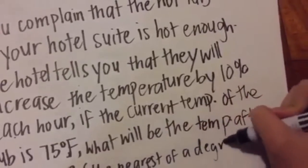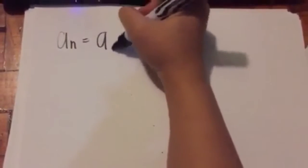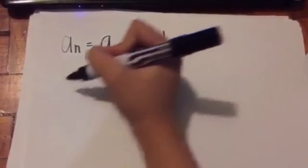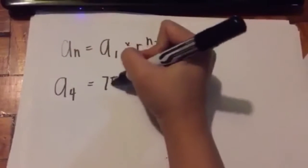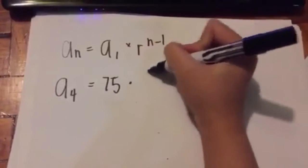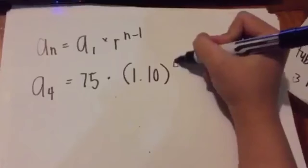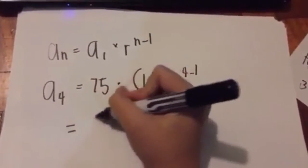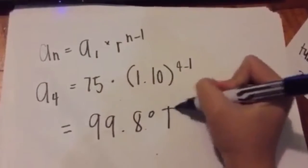Use the formula: an equals a1 times r raised to n minus 1. So a4 equals 75 times 1.10 raised to 4 minus 1. 1.10 is your common ratio because that's what you got from the problem. You get 99.8 degrees Fahrenheit.